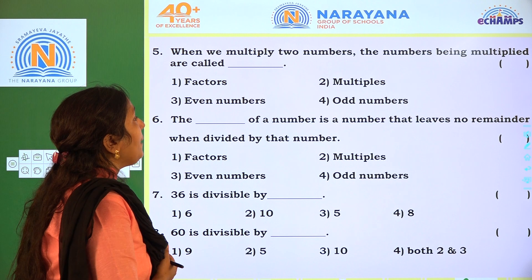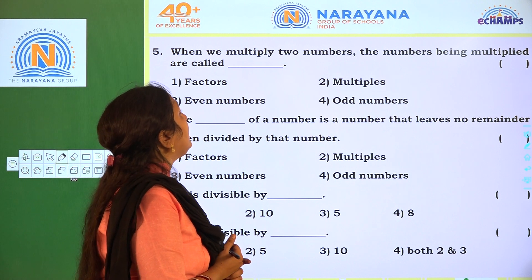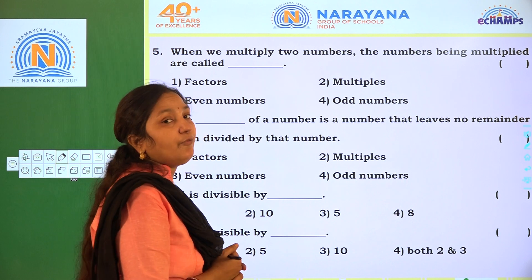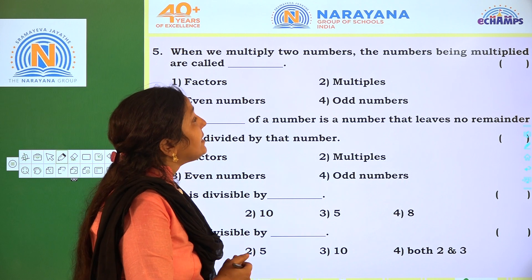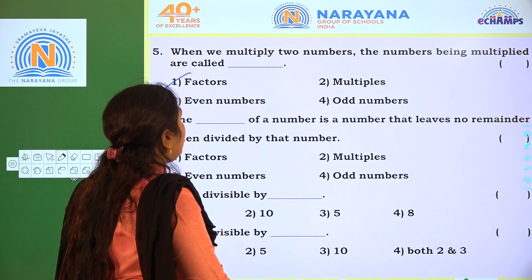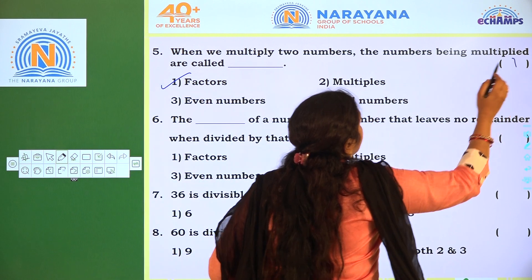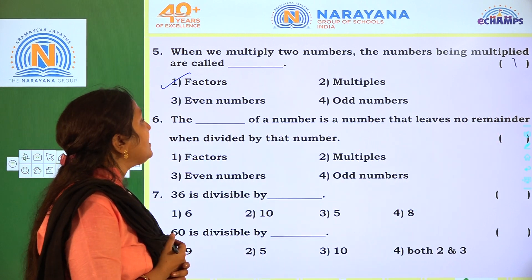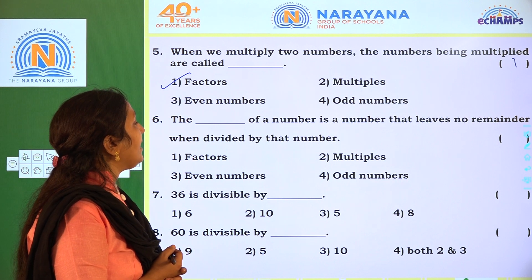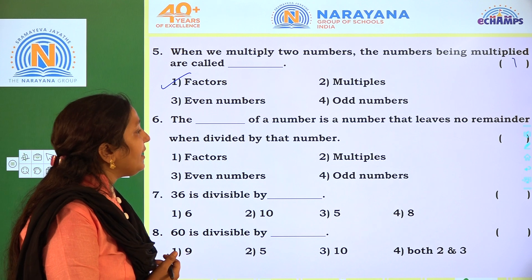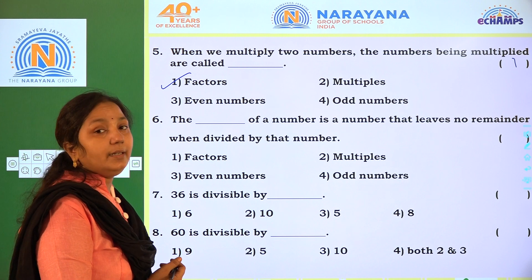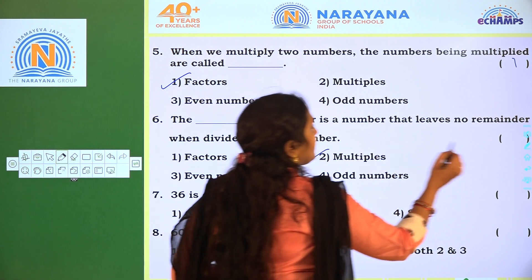Next one: when we multiply two numbers, the numbers being multiplied are called factors. Our required option is 1. Next: the blank of a number is a number that leaves no remainder when divided by that number. Our required option is 2.